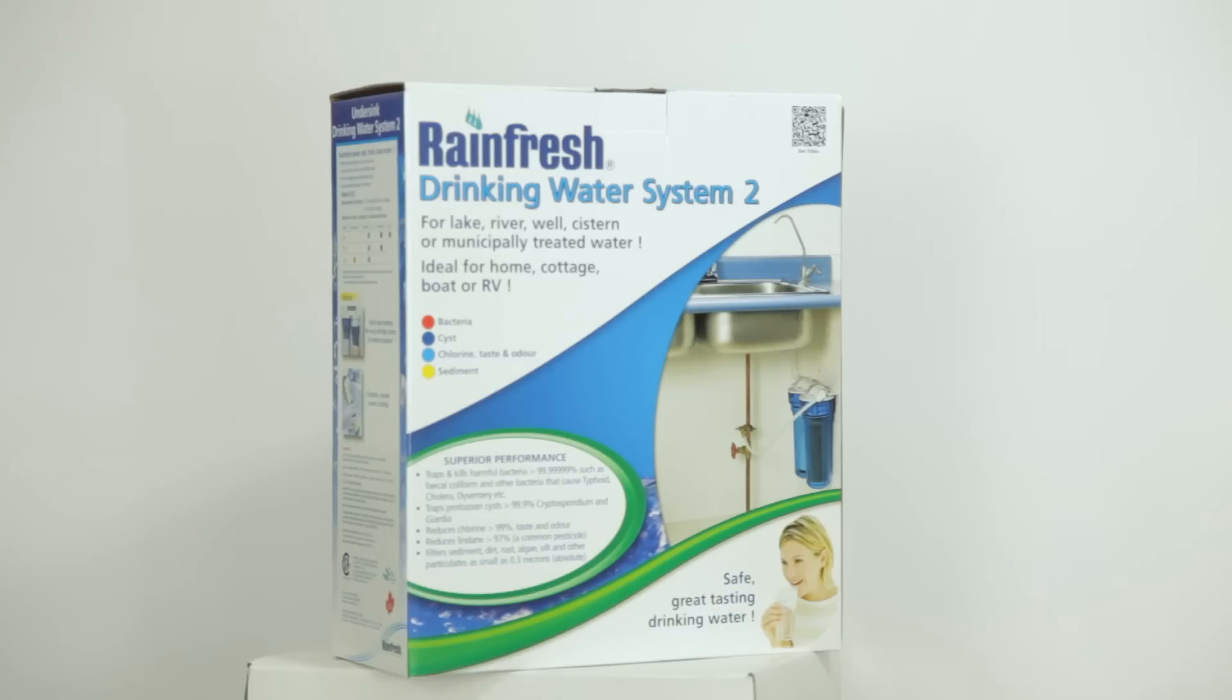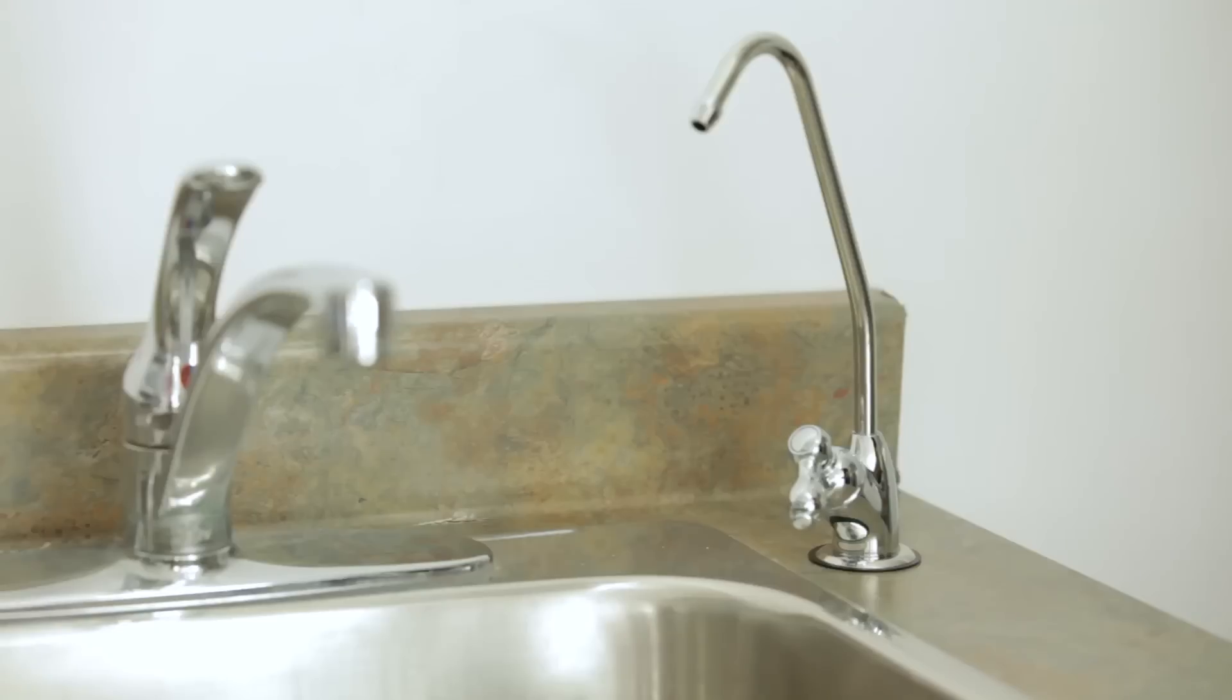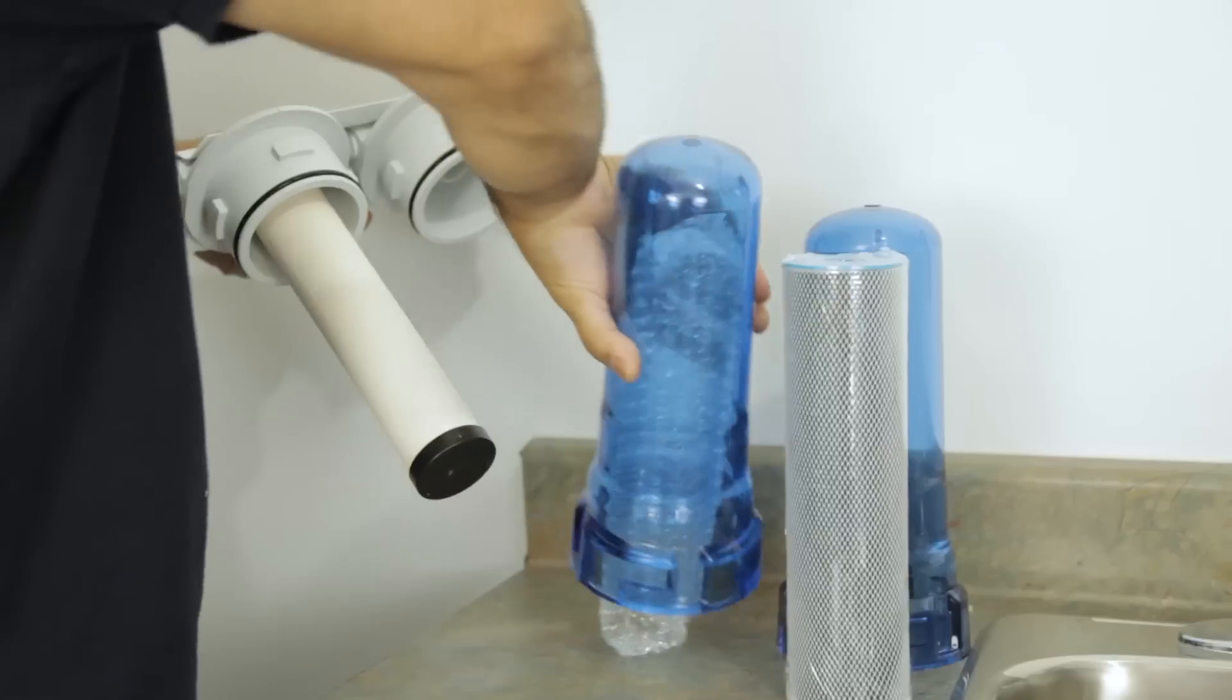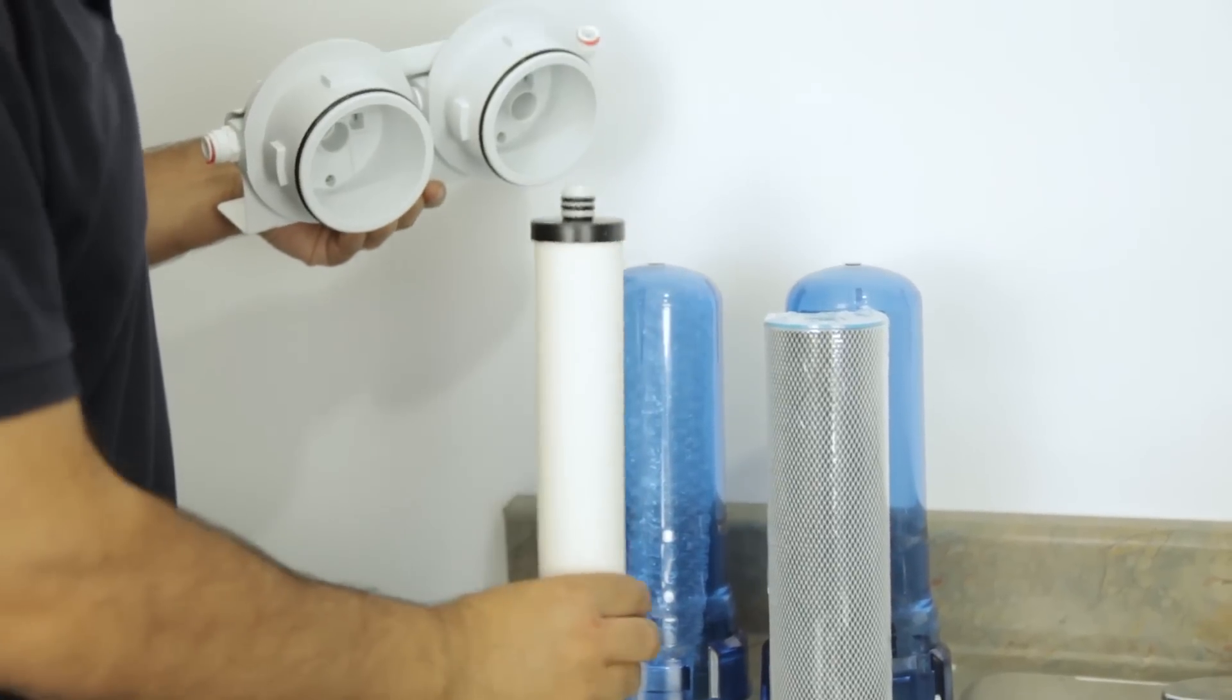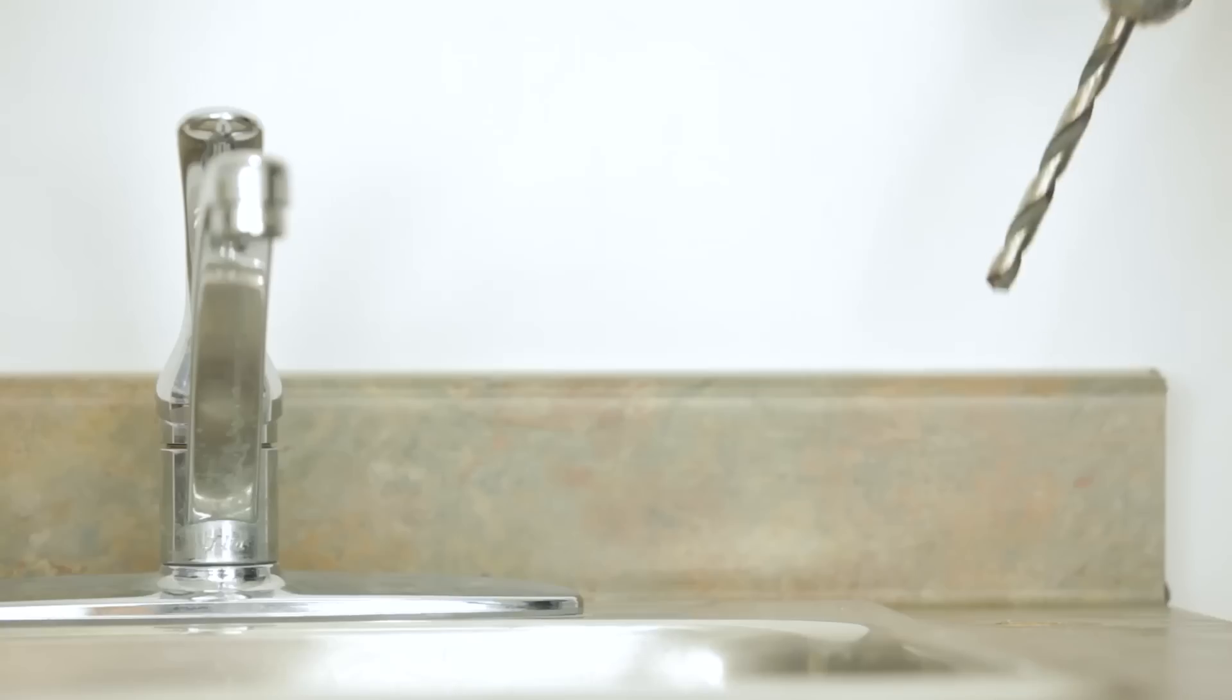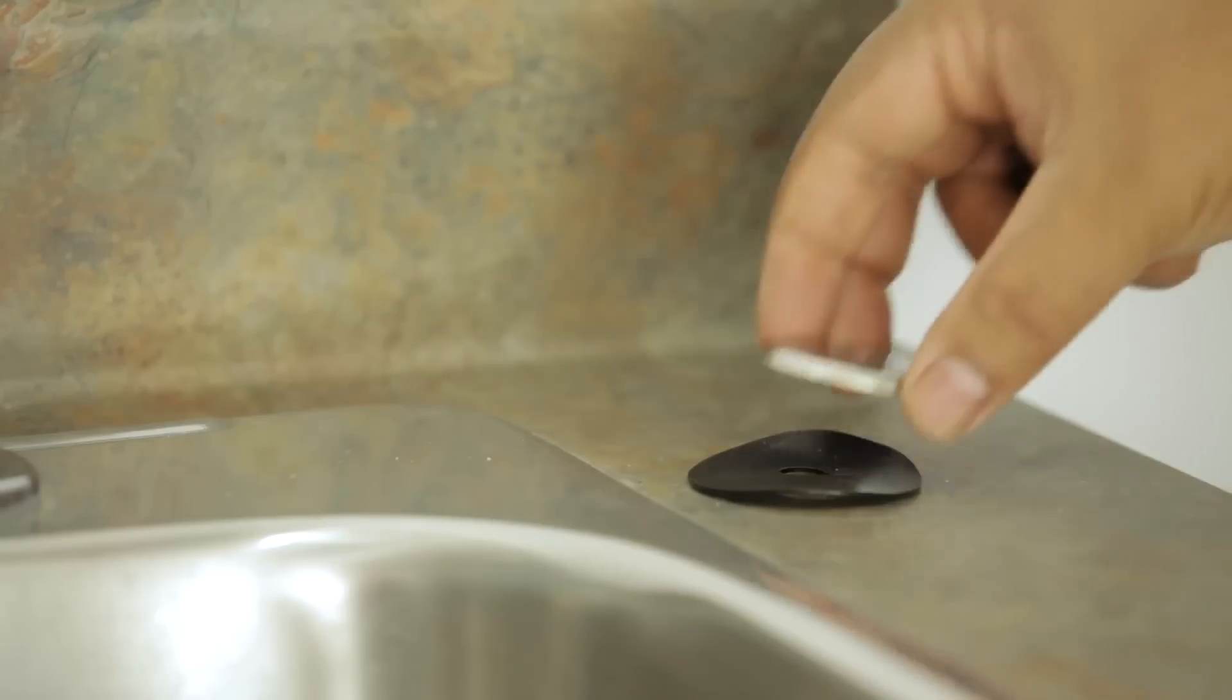Rainfresh Drinking Water System 2 is installed under the sink and includes a dedicated chrome faucet. Unpack the unit and remove sumps and cartridges. Place these aside until final assembly. Mark and drill a half-inch hole in your countertop.